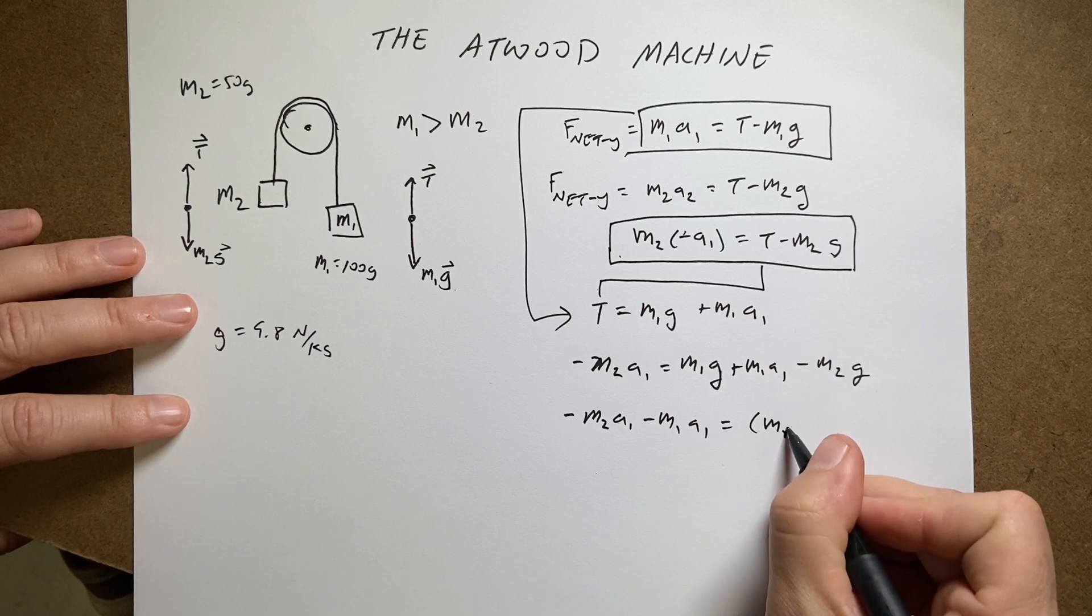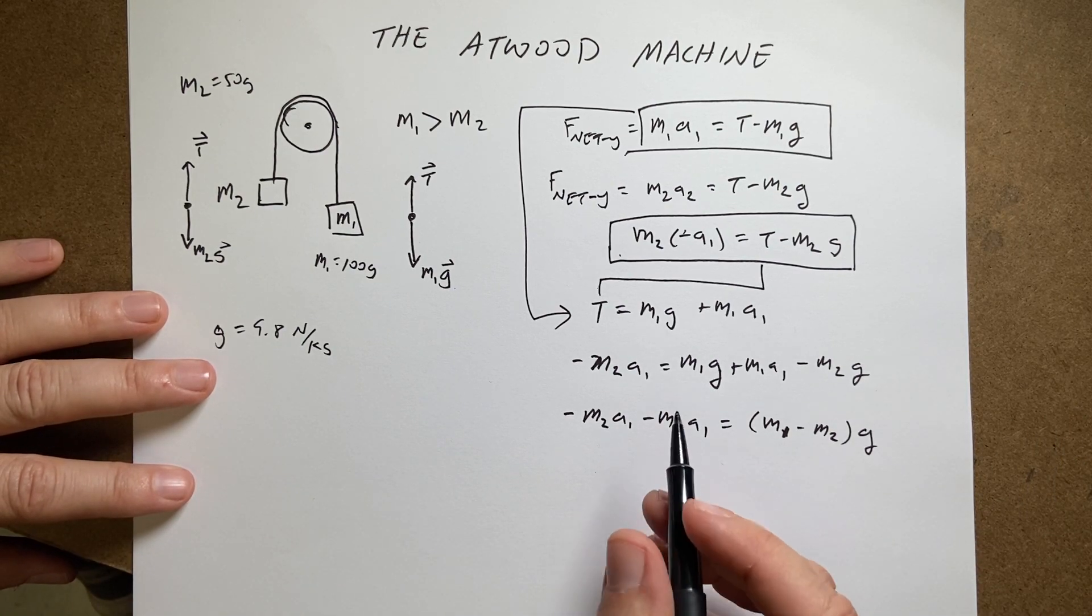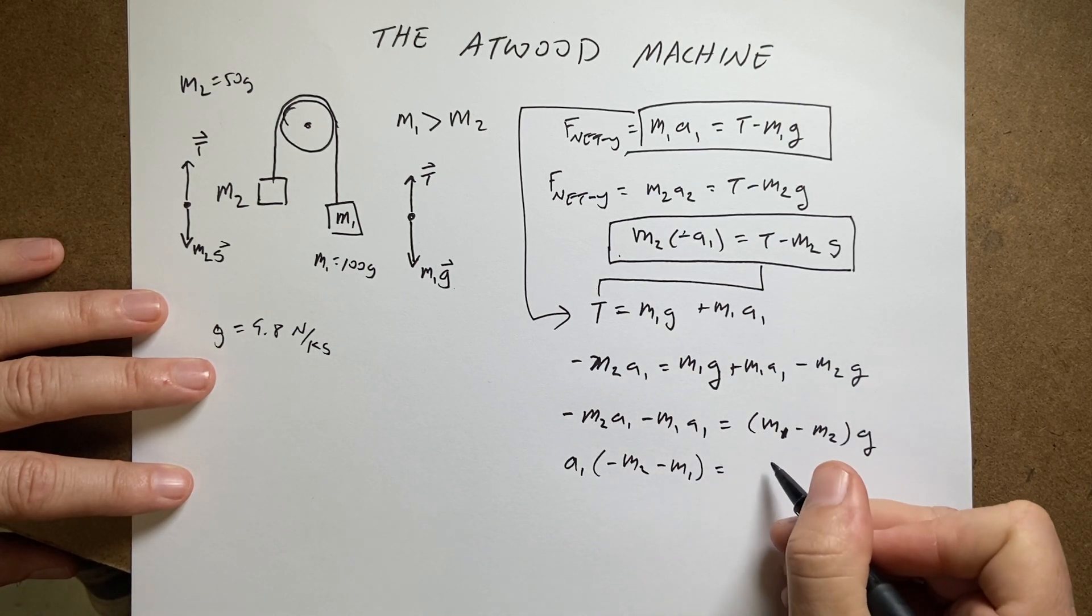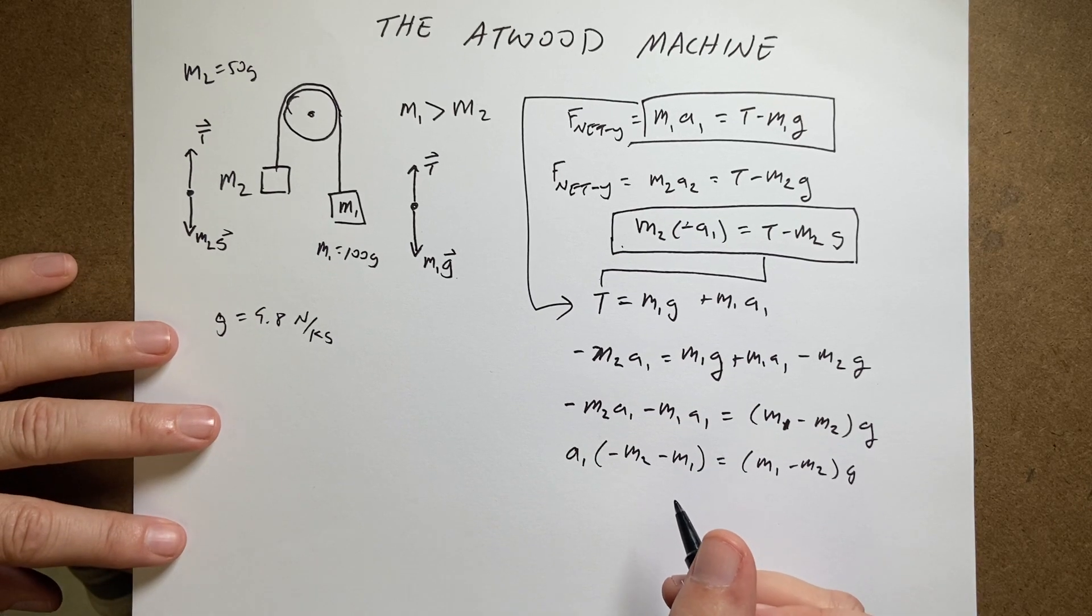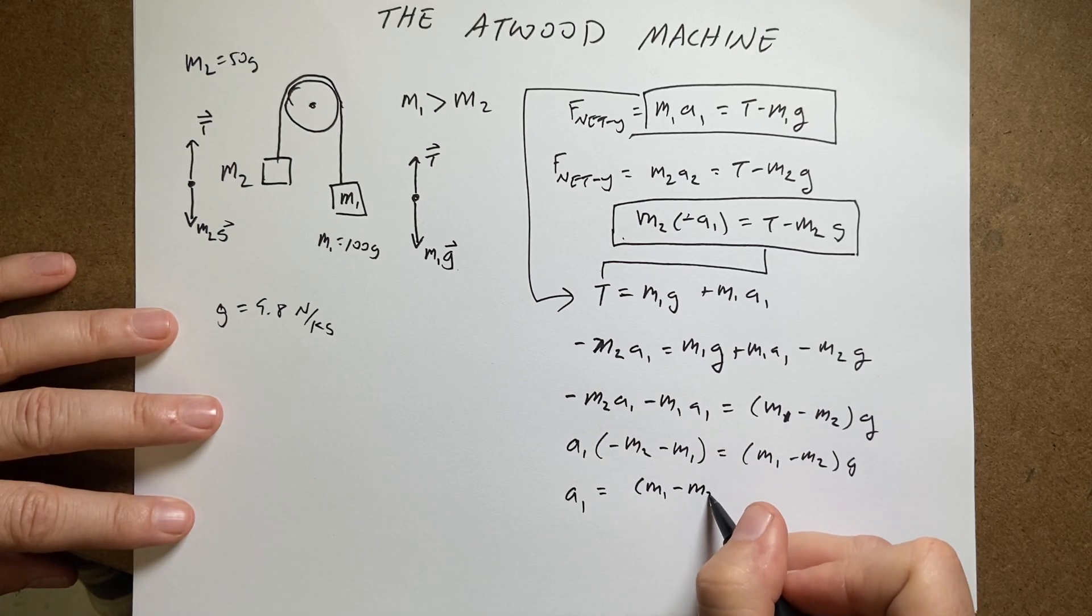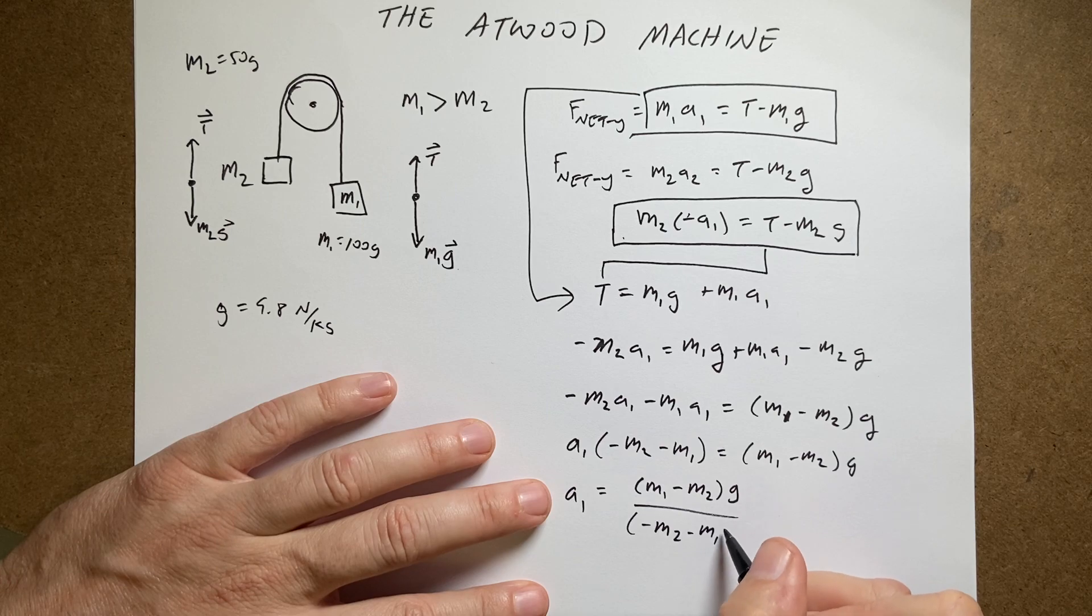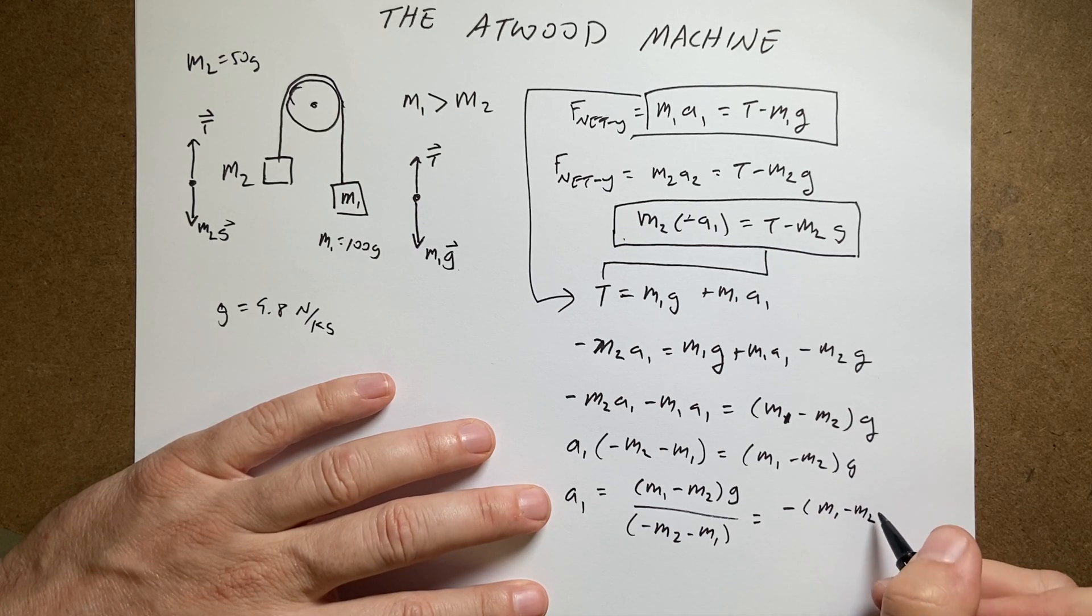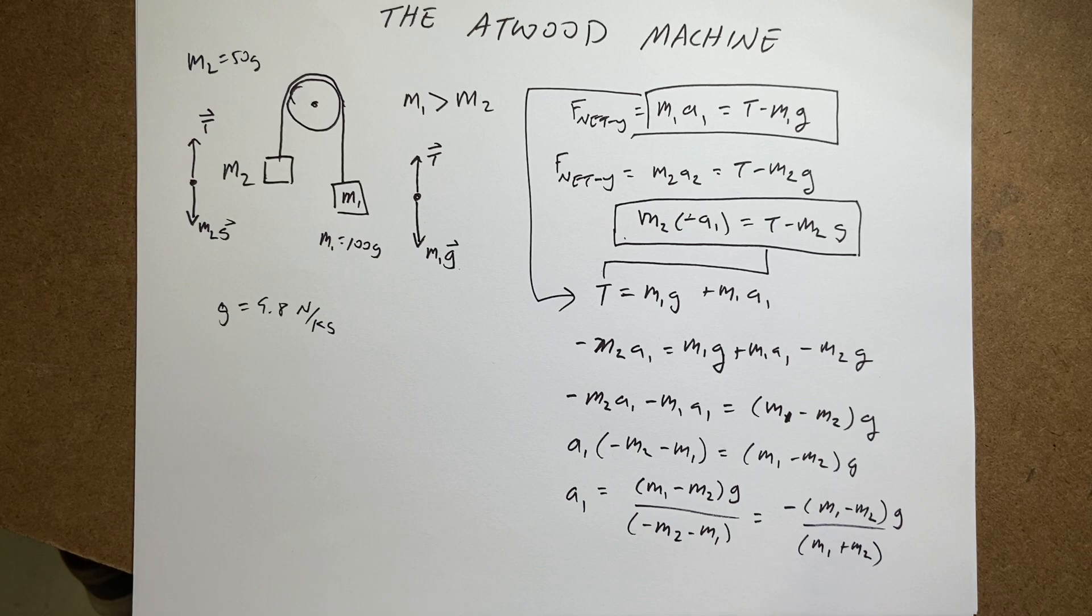Now I can factor out the a1 out of this term and I get a1 times negative m2 minus m1 equals m1 minus m2 g. And now I can divide both sides by minus m1 minus m2 and I get a1 equals m1 minus m2 g over negative m2 minus m1. And I'm going to rewrite that, I'm going to factor out a negative sign right there. Negative m1 minus m2 g over m1 plus m2. And that's my acceleration for a1.